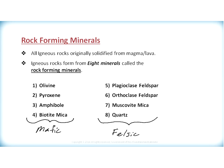Mafic minerals are generally dark in color, whereas felsic minerals are generally light in color.